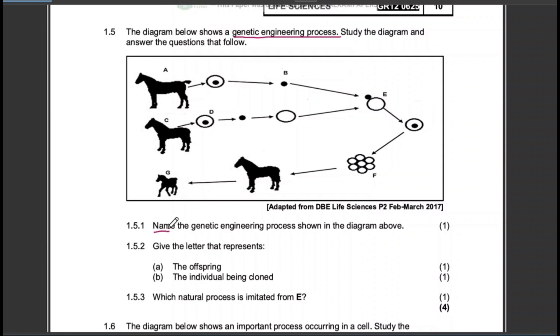So 1.5.1 says we need to name the genetic engineering process that is shown in the diagram above. So that is obviously cloning, one mark.